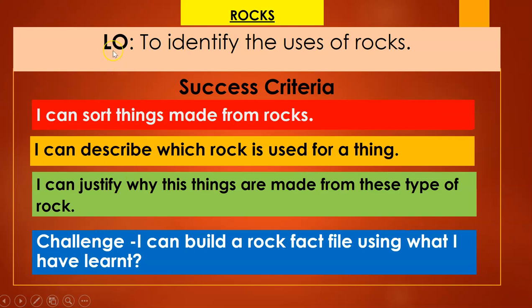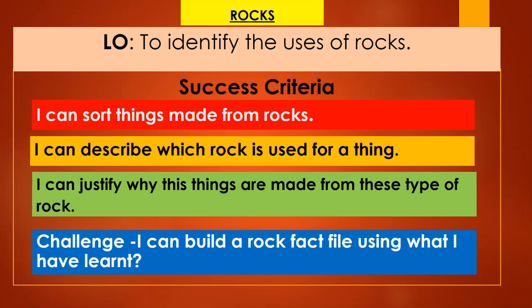Our learning objective for today is to identify the uses of rocks. Success criteria: I can sort things made from rocks. I can describe which rock is used for a thing. I can justify why these things are made from this type of rock. And I can build a rock fact file using what I have learned.